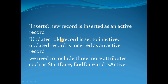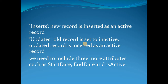In SCD Type 2 we have two operations: insert and update. When it is a new record, only an insert will happen. Whenever there is an update to an existing record, we update the old record as inactive and also insert a new record marked as active. To implement SCD Type 2, the data warehouse table will have three additional columns: start date, end date, and an active column.